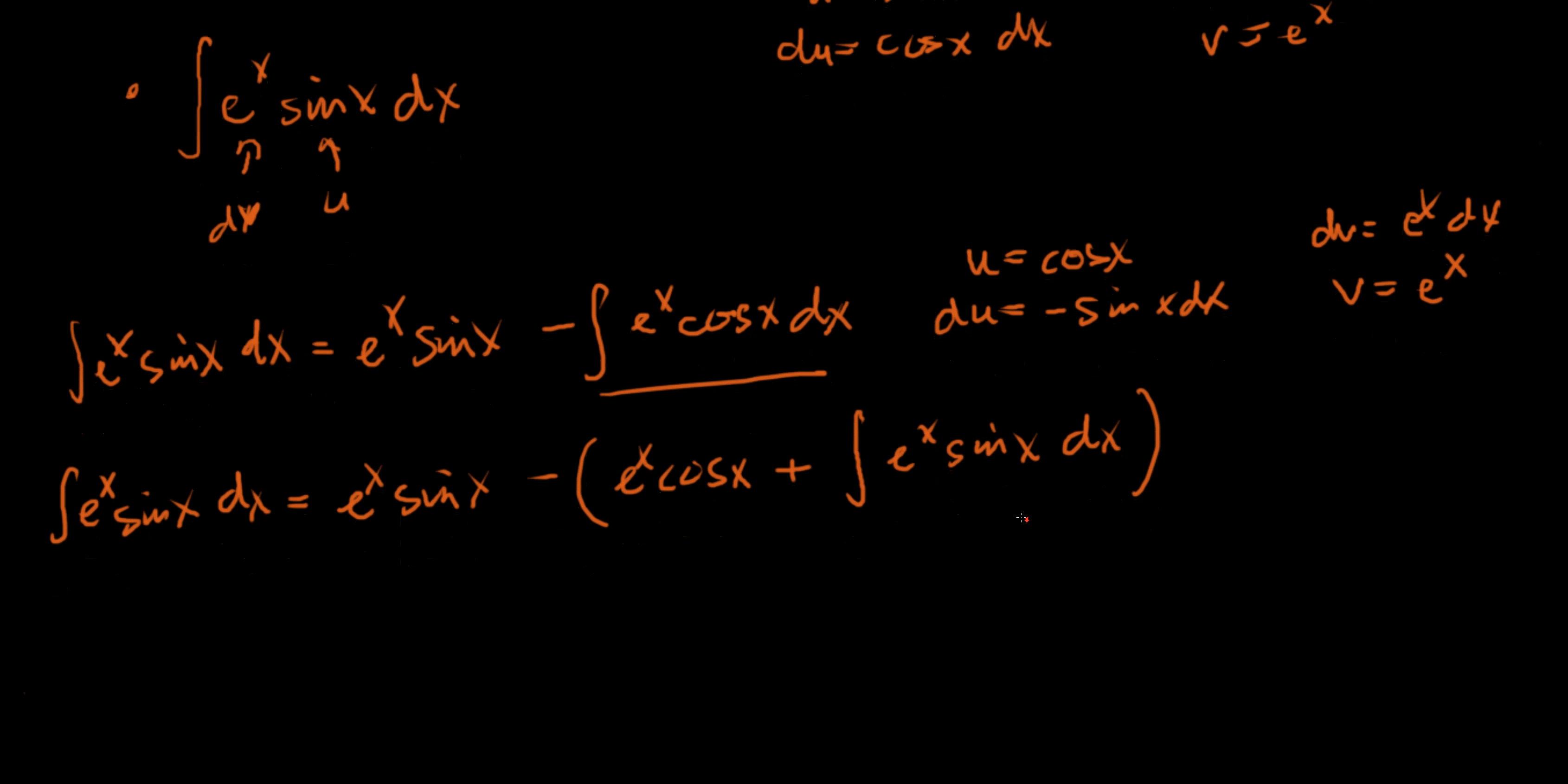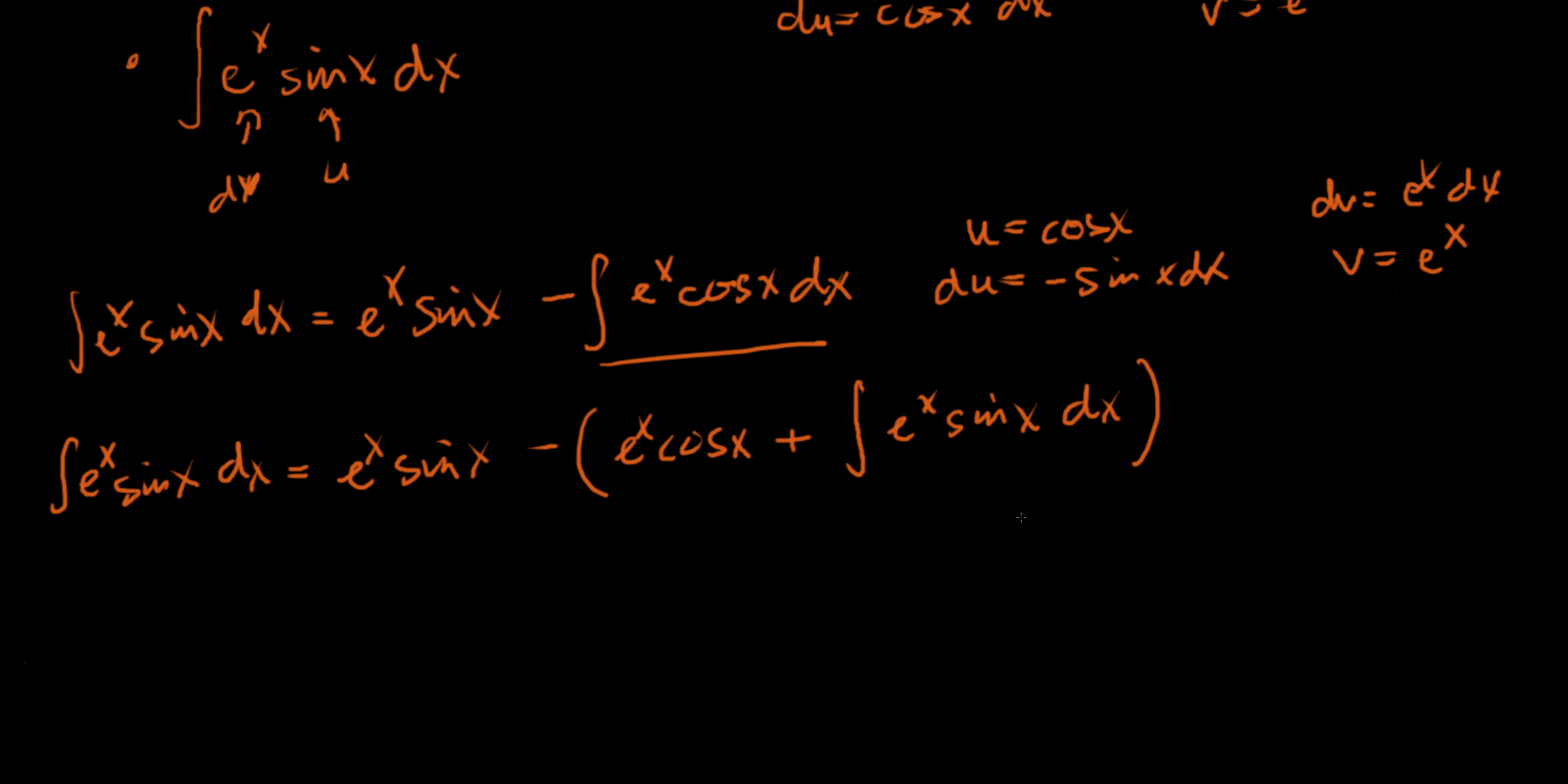And now hopefully you see this integral here, our vdu, is the integral that we started out trying to solve. It appeared again on the right side of the equation. This should let you know when you see this happen that you need to not continue on because you're just going to keep making this loop. You just need to distribute this negative sign and then move this term to the other side of the equality, combine your like terms.